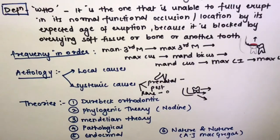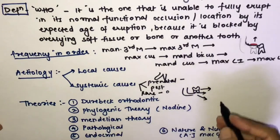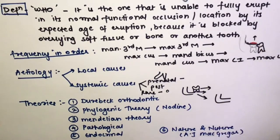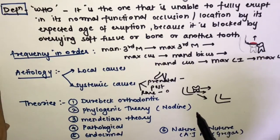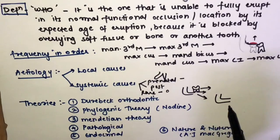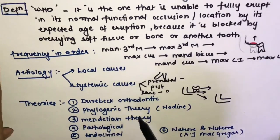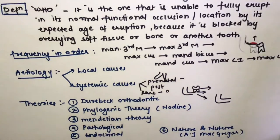The second theory is the phylogenic theory given by Nodine: due to evolution over the centuries, the human jaw size has become smaller than that of ape-like ancestors. Since the third molar is the last to erupt, there is no space in the oral cavity and it gets impacted.